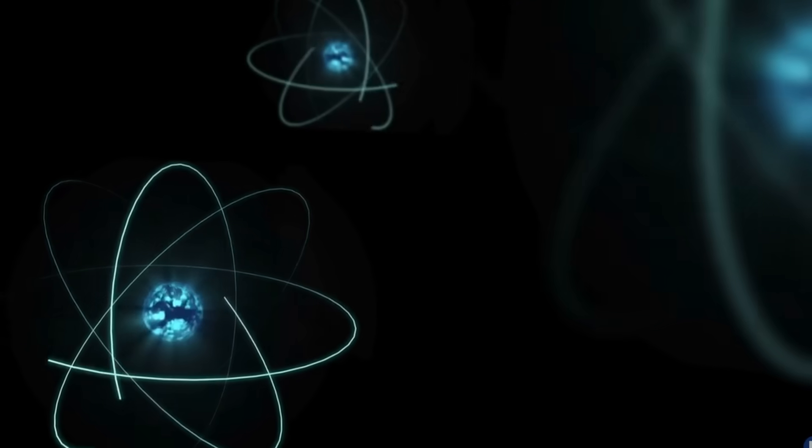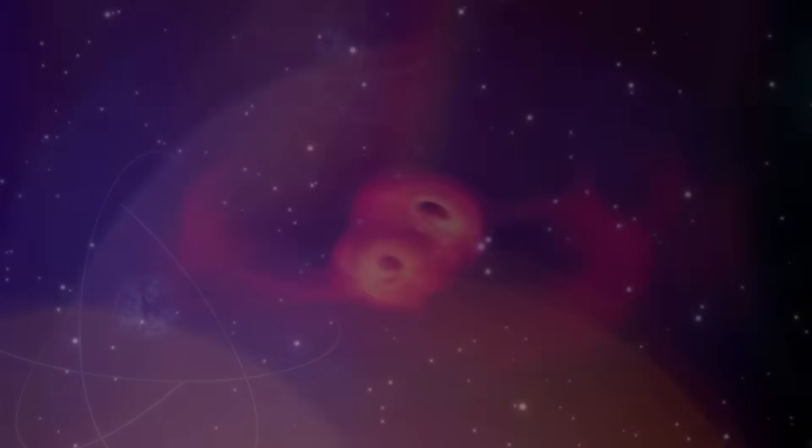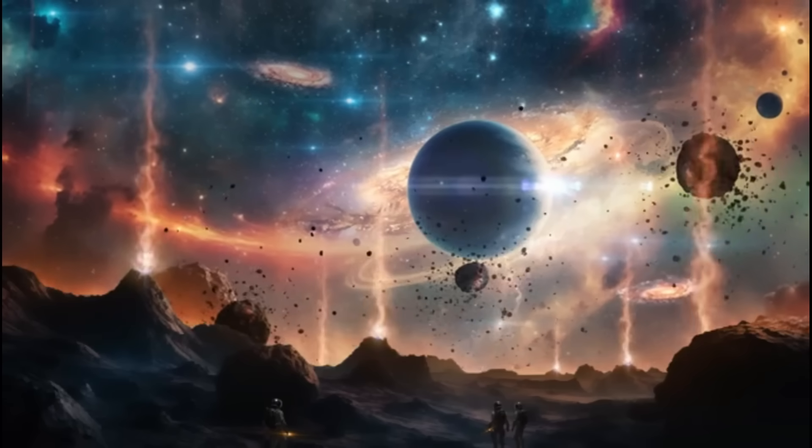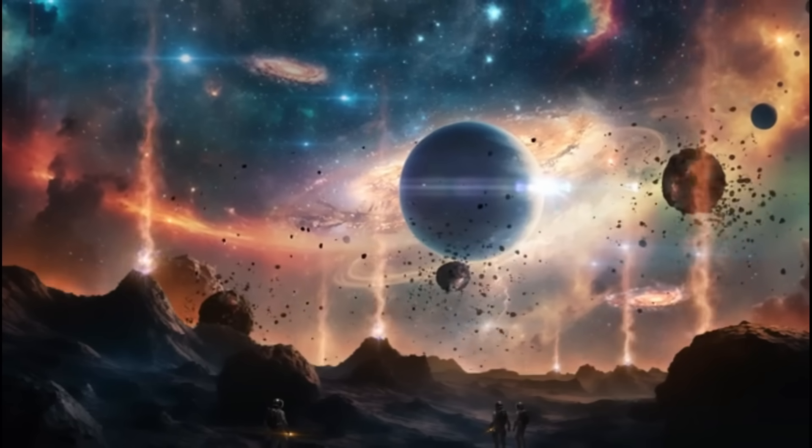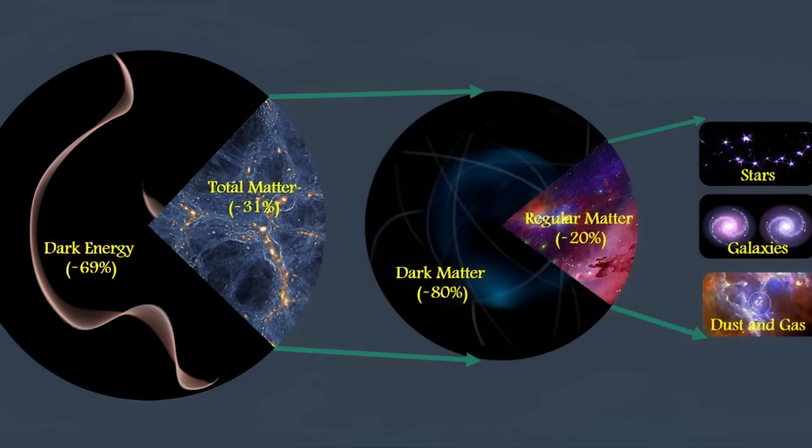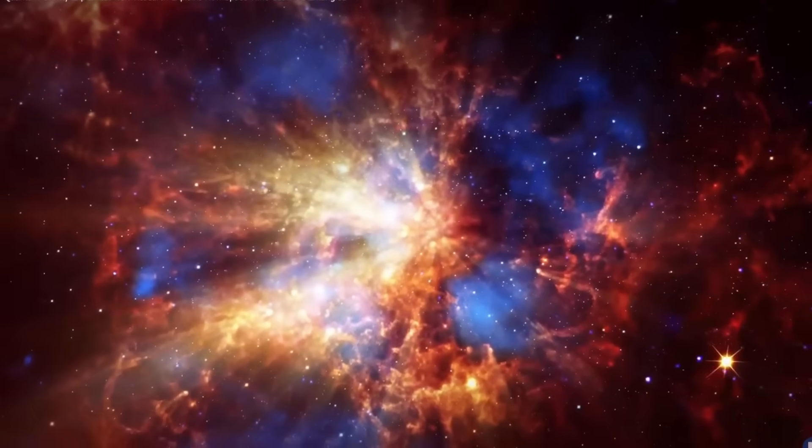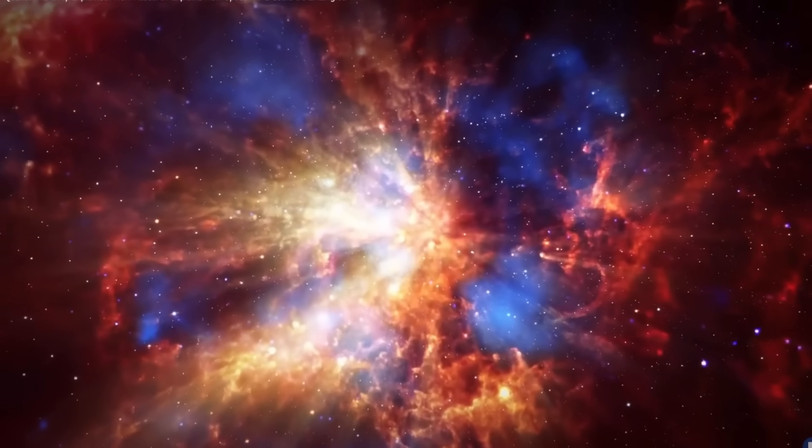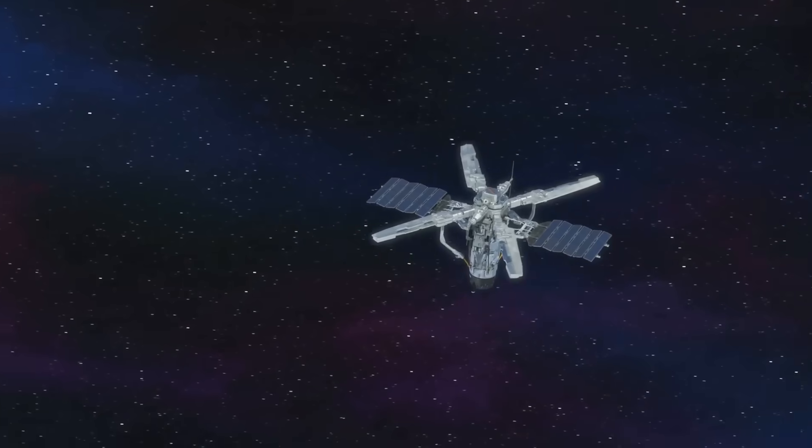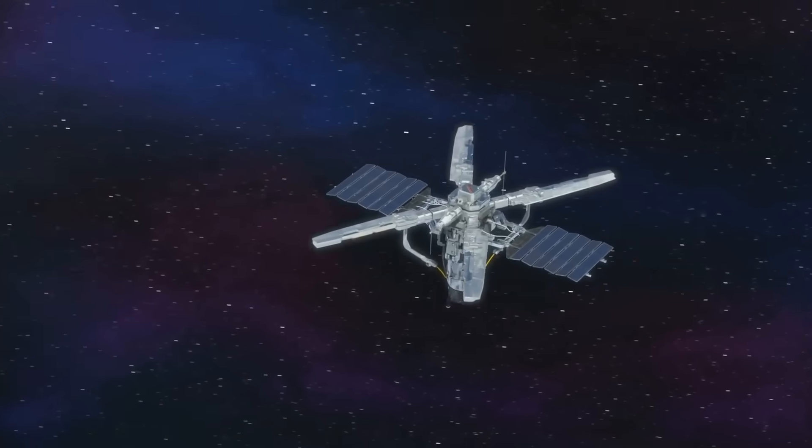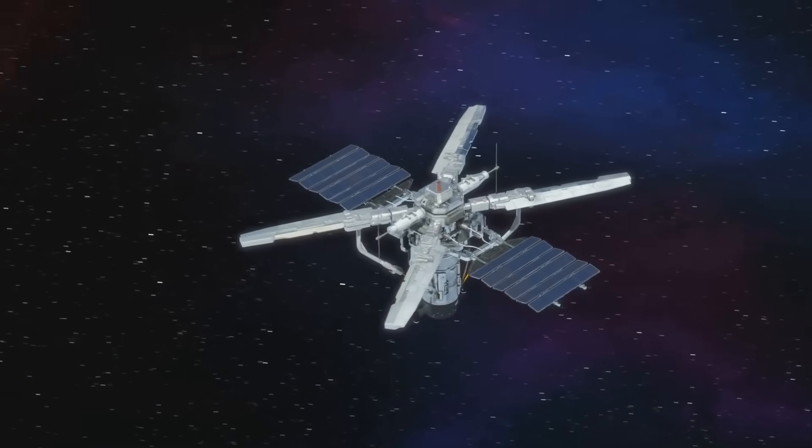The second theory takes us into more exotic territory. A dark matter pocket. Dark matter makes up roughly 27% of our universe, but remains invisible to direct detection. Some cosmological models suggest dark matter might cluster in unexpected ways, potentially creating localized distortions and gravitational fields. Could the sensor have detected a momentary interaction with this mysterious substance? A bubble or pocket of dark matter passing through our ordinary space?